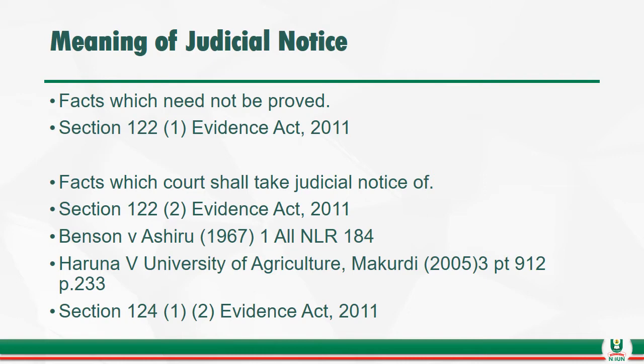In evidence, generally speaking, all facts in issue between parties ought to be proved by evidence — that evidence may be documentary or oral. The principle is that he who asserts must prove that which he asserts. However, in certain exceptions, that concept of 'he who asserts must prove' does not operate. One of those exceptions is judicial notice: a way by which a court can take cognizance of a fact otherwise than by evidence.